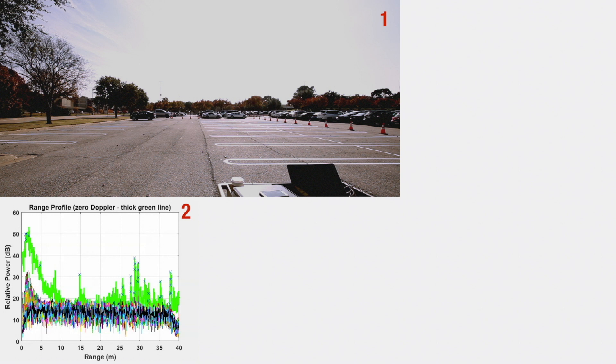The reflections seen in the range of 1 to 6 meters are the ground clutter. Detection at 50 meters is the tree. Multiple detection points around 25 to 30 meters are from the parked car on the left.